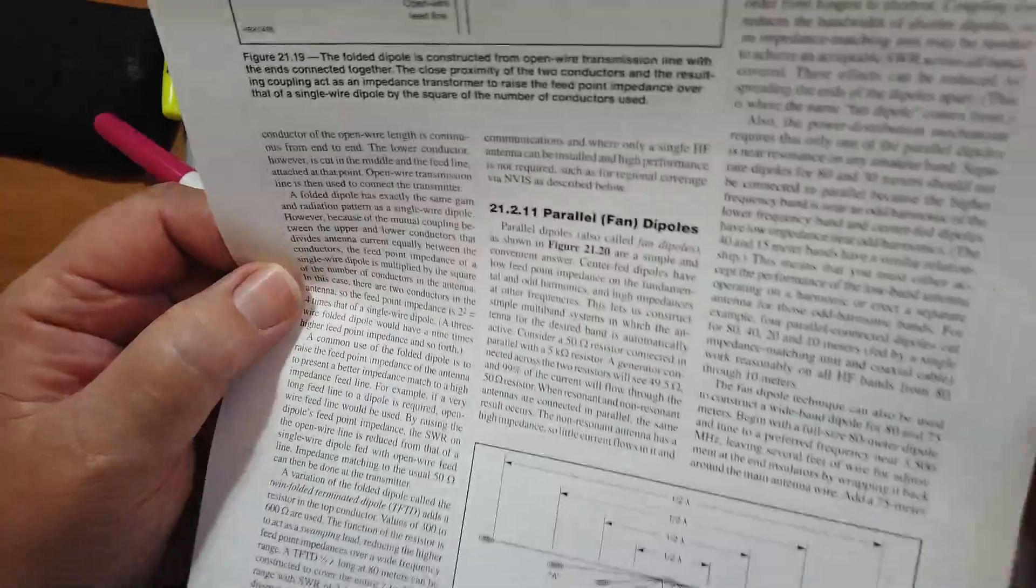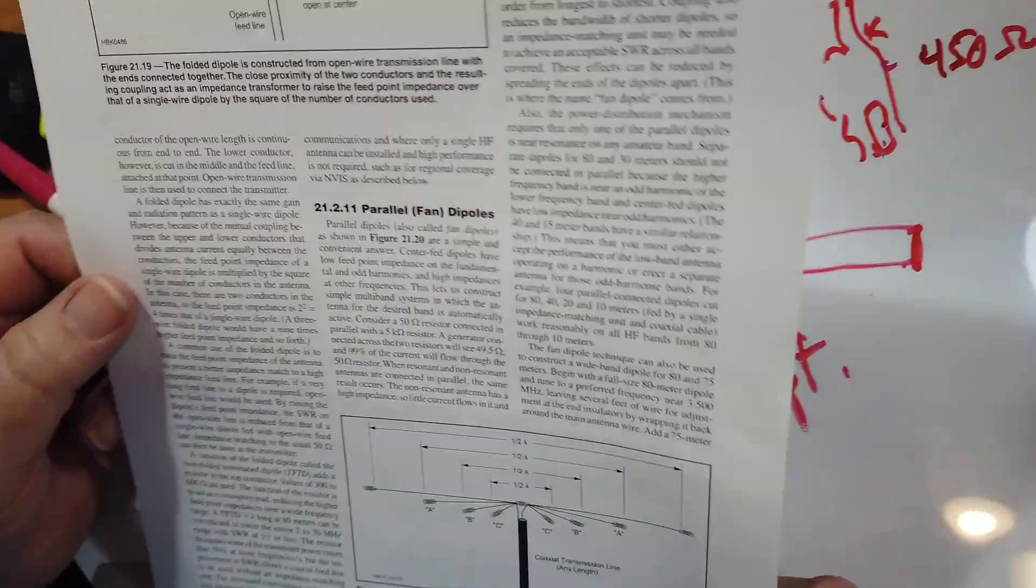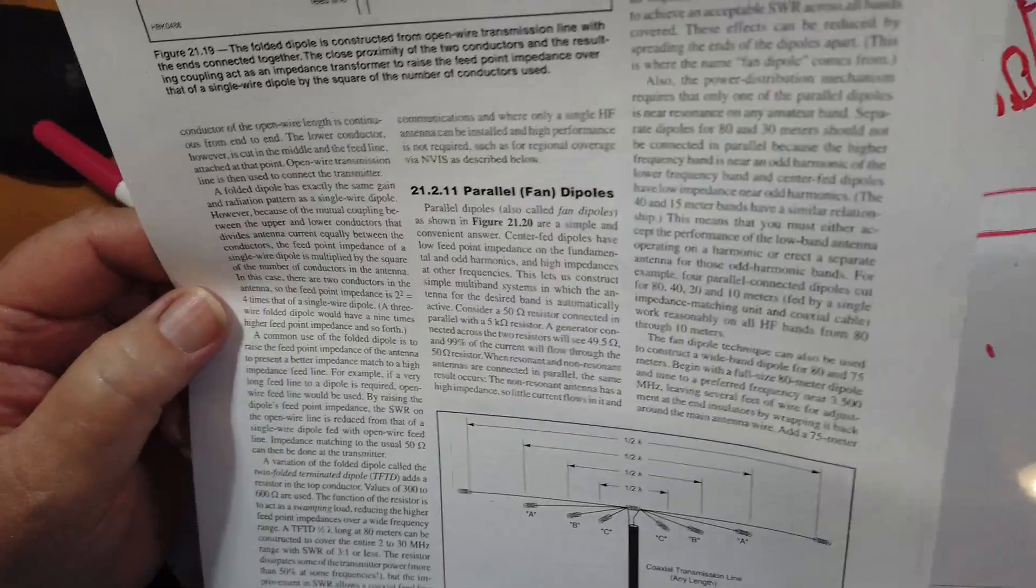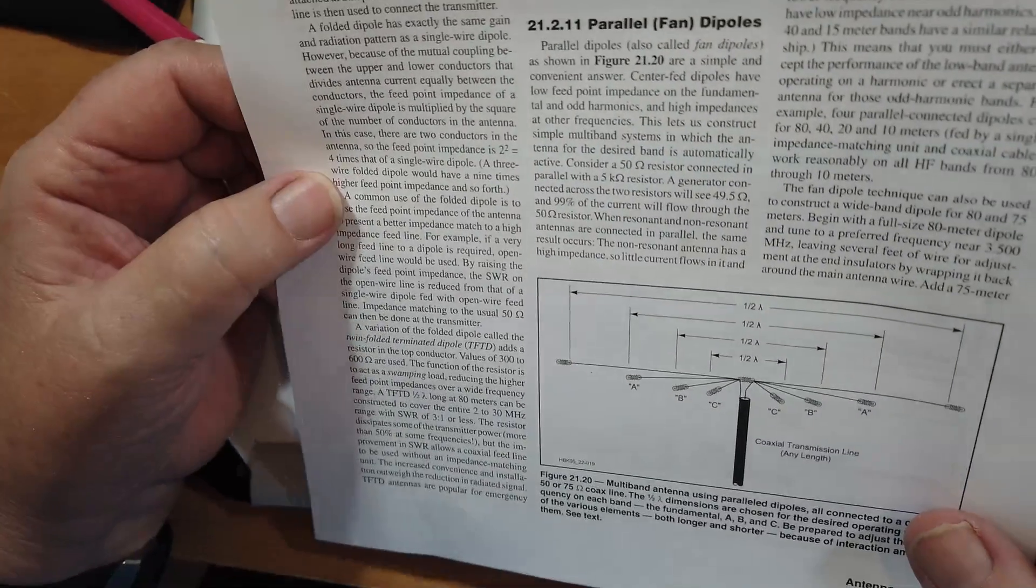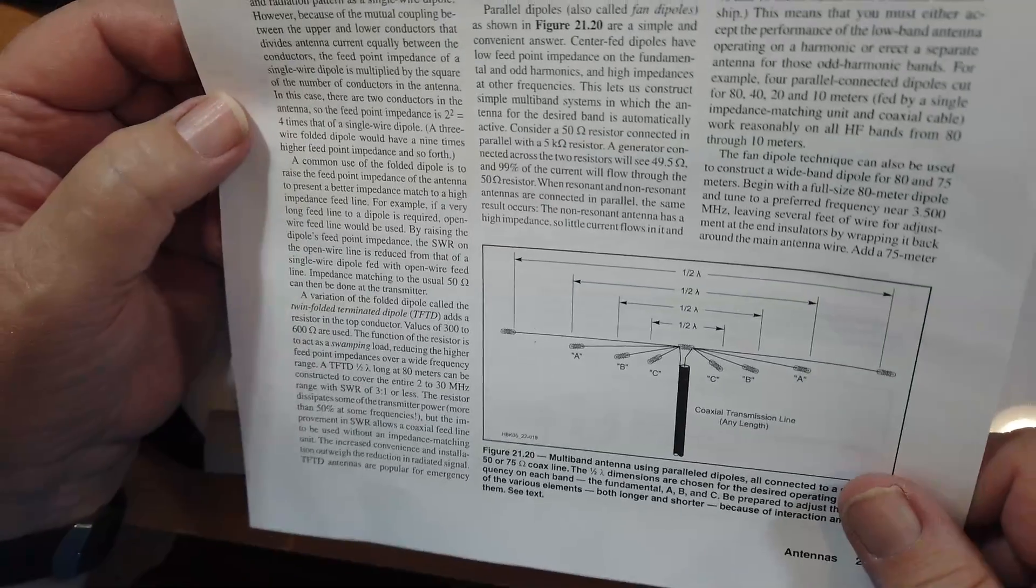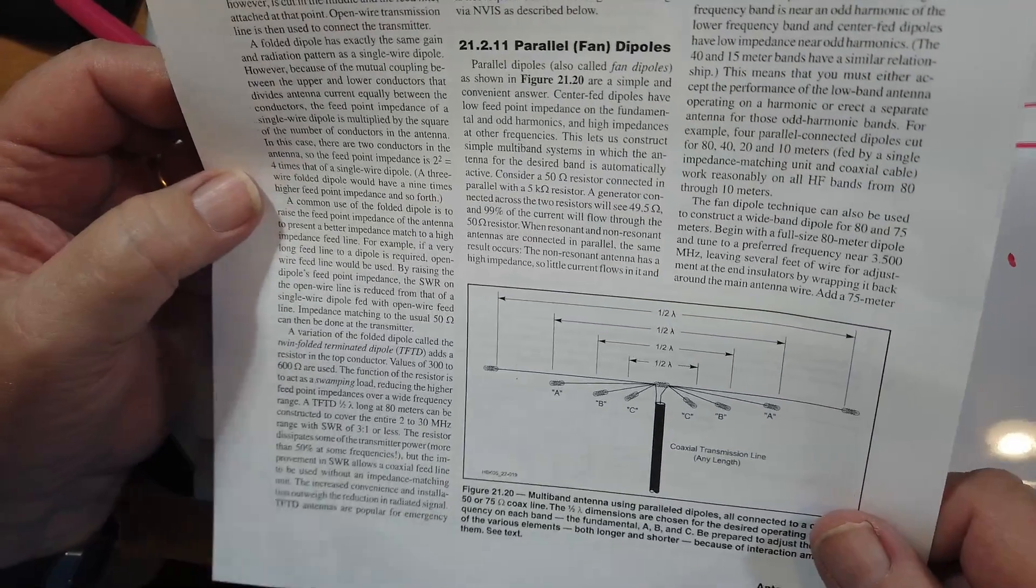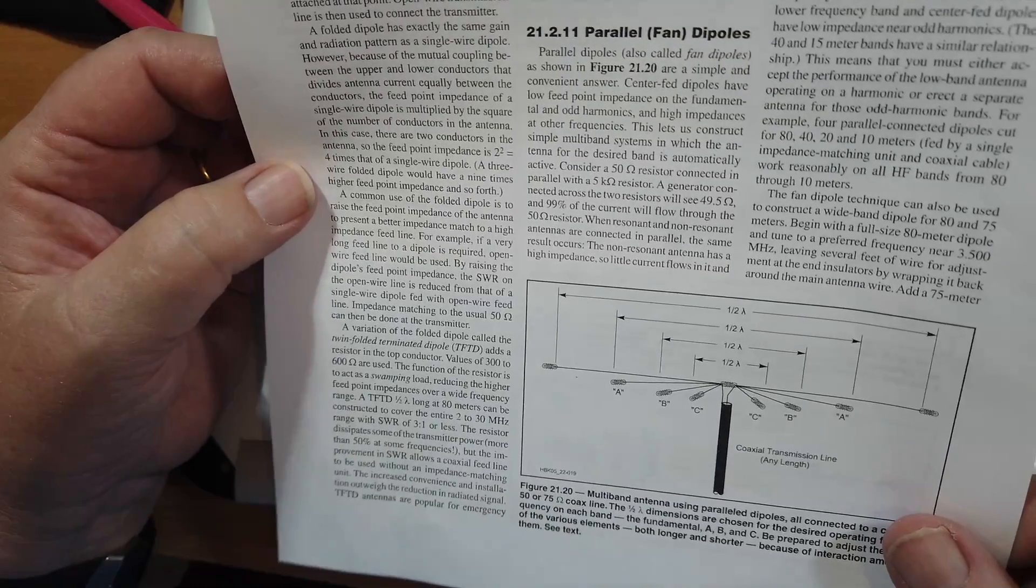So, in other words, it acts just like a dipole. It says, in this case, there are two conductors in the antenna, so the feed point impedance is two squared, or four, times that of a single wire dipole. A three-wire folded dipole would have a nine times higher feed point impedance, and so forth.